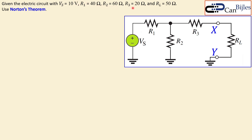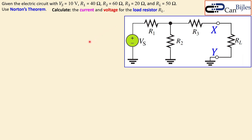We have R1, R2, and R3 with values given in the circuit, and a load of 50 ohms connected between node X and Y. Using Norton's theorem, we want to calculate the current and voltage for the load resistor — the same question as in the Thevenin's theorem example, but now solved using Norton's theorem.